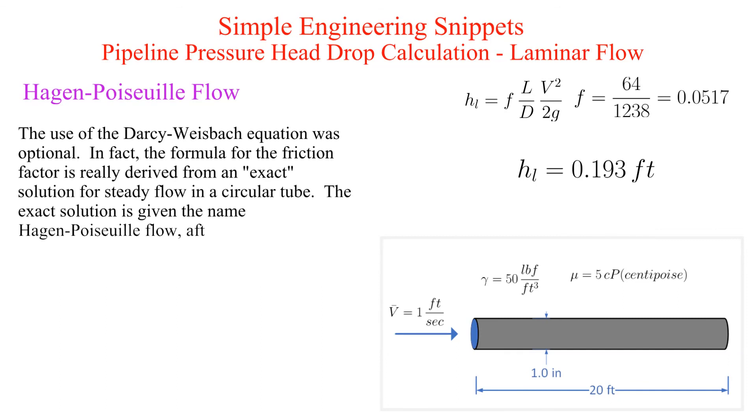The pressure drop for this type of flow can be calculated with the following equation. In future instructional videos I'll work some examples using this technique and possibly the derivation of the Hagen-Poiseuille flow equations.